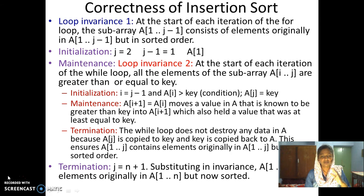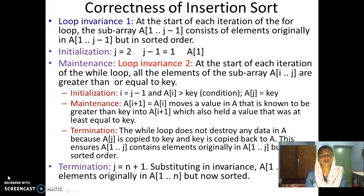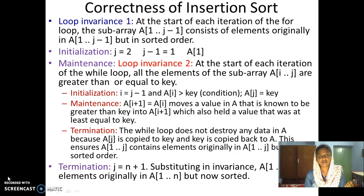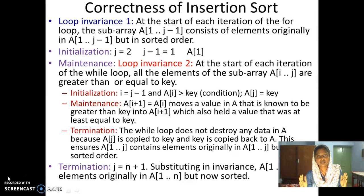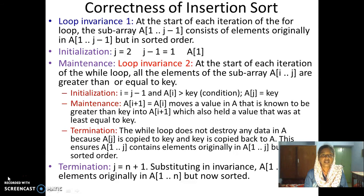Loop invariance means something which is invariant — not changing across loops. We will use two invariants. The first one is for the for loop: at the start of each iteration of the for loop, the subarray a[1] to a[j-1] actually has the elements which were originally there in the array, but in sorted order. With every iteration, elements from 1 to j-1 will be the same set but in sorted order. We will use a technique very similar to induction to prove this invariance — the first step is initialization.